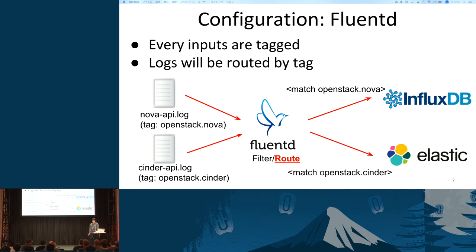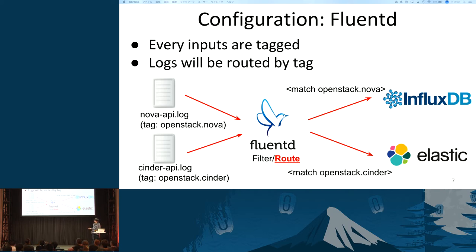Let me move on to the first aspect of comparison: configuration. Fluentd and Logstash are configured in different styles. In Fluentd, every input is tagged and logs are routed by the tag. In this figure, Nova API logs are tagged as OpenStack.Nova and Cinder API logs are tagged as OpenStack.Cinder. So Nova API logs are routed to InfluxDB because it matches that section, and Cinder API logs are routed to Elasticsearch.